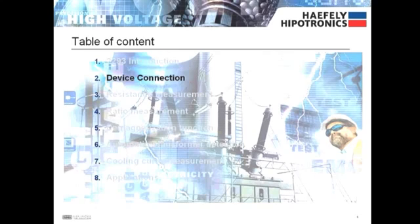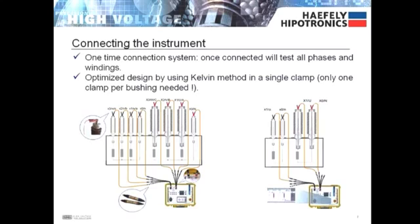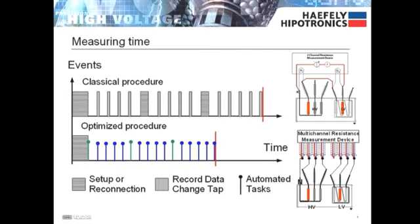Next is the device connection. The 2293 has a one-time connection system which means the user connects one clamp per bushing just once and then can measure all phases and windings. This cuts down on the total test time when compared to the classical procedure of measuring winding resistance which involves several reconnections.